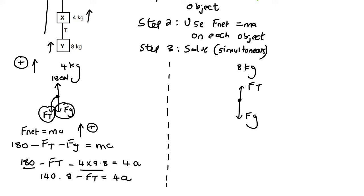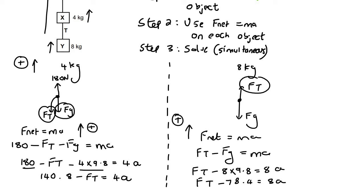Now we can't do anything more. So we move on to the next object. Now remember, we're going to say F net equals ma. And it's also going in the upwards direction. So that means this tension force is a positive, whereas this gravity is a negative. So that's going to be minus Fg. And that's equal to ma. And so we can say FT minus 8 times 9.8. And now the mass is 8 and a. I'm just going to quickly type this part on my calculator. So it'll be FT minus 78.4. Step two is now complete. We've used F net equals ma on each object. And now the next part is to solve. And it's usually simultaneous.